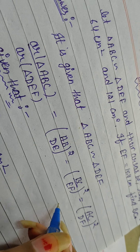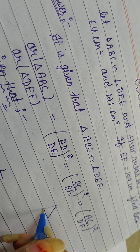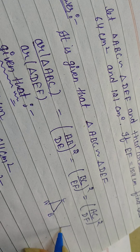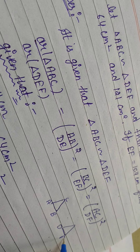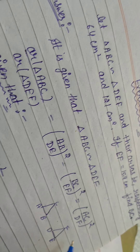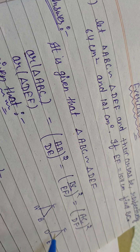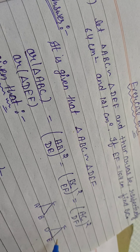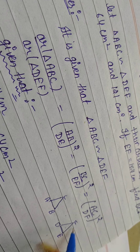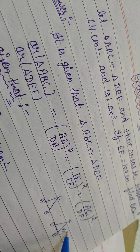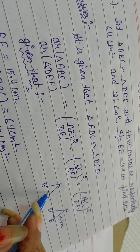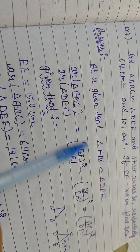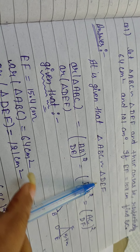आपके पास एक triangle ABC है और एक triangle DEF है। तो suppose आपने ABC यहाँ से बनाया, और आपका जो DEF है वो यहाँ से बन गया। यह आपके triangles हैं। अब इनका area दे रखे है दोनों का, respectively 64 cm square and 121 cm square। और इसमें से EF की जो side है वो दे रखी है 15.4 cm। आपको BC find करना है। It is given that triangle ABC is similar to triangle DEF.